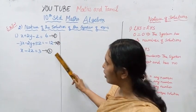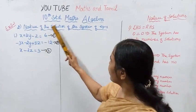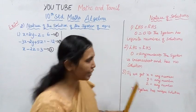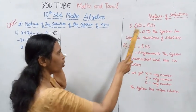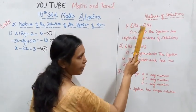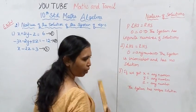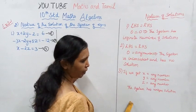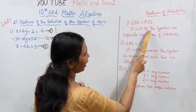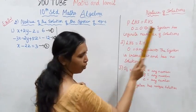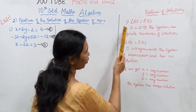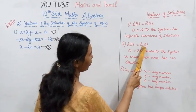One of the three cases for the nature of the solution: left hand side is equal to right hand side, that is 0 equal to 0. When we get 0 equal to 0, the system has an infinite number of solutions.